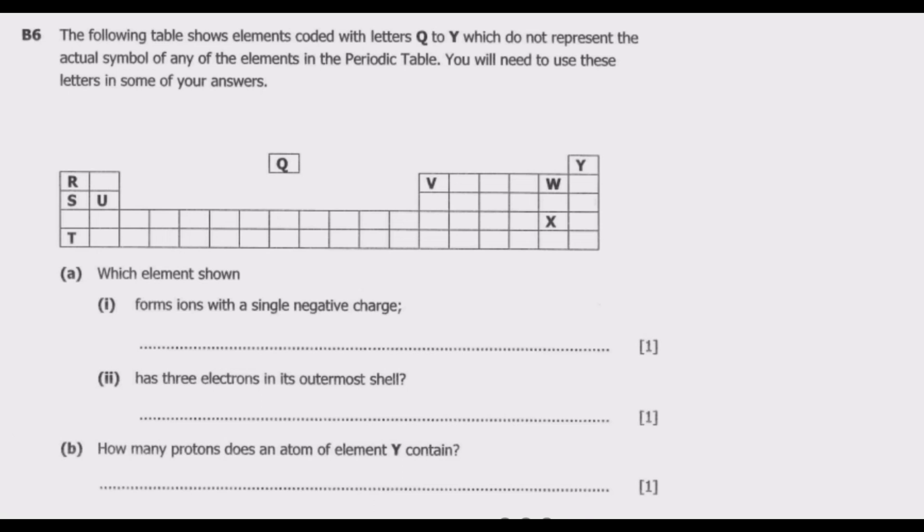Let us look at the options. We have R, which is a metal, so R, S, U, T are metals, even V. Then we have Y, W, and X.